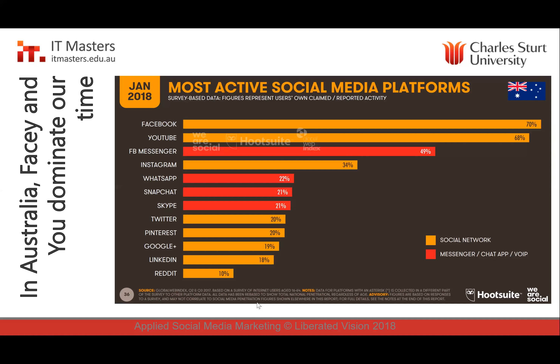Most active social media platforms in Australia: Facebook at 70%, though it's shrinking and likely maintaining its user base through Messenger. Instagram has grown strongly to 34% of the active social media population. Twitter and LinkedIn have very specific audiences. Pinterest also has a specific audience. Google+ is going to get the chop — they had a data breach and Google is shutting it down, so save your photos if you have anything stored there.